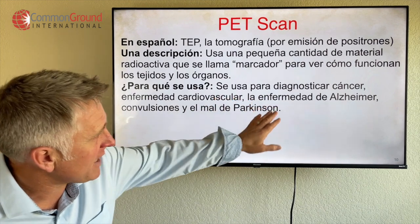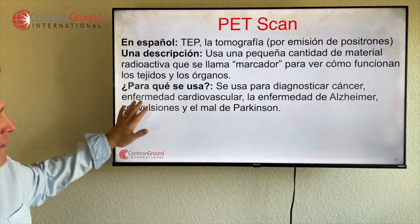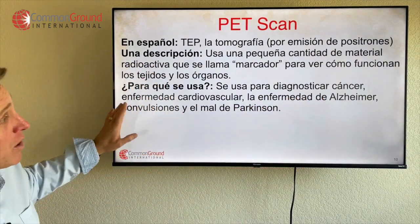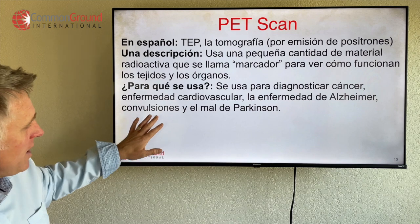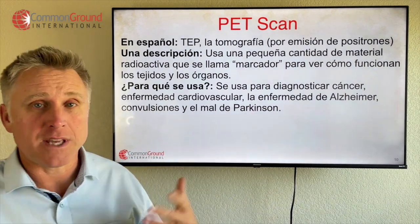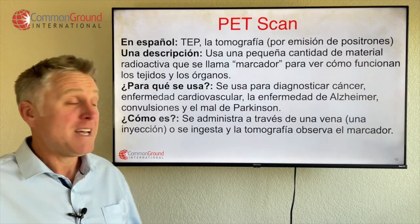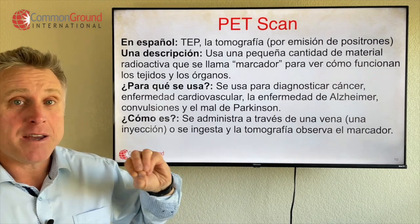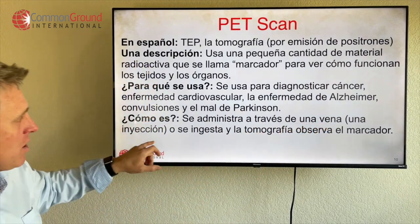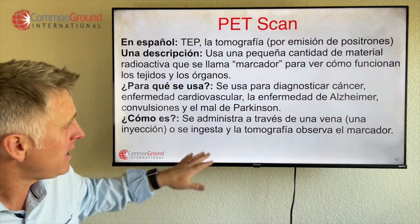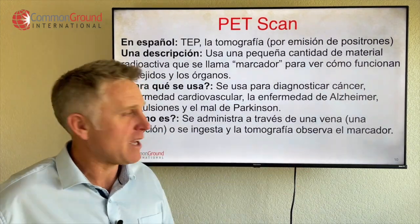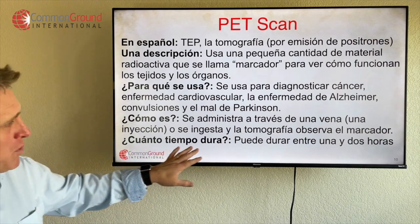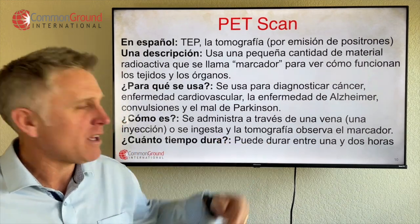Se usa para diagnosticar cáncer, enfermedad cardiovascular — so heart disease — la enfermedad de Alzheimer, y convulsiones, seizures, y el mal de Parkinson's disease. ¿Cómo es? Se administra a través de una vena — so it can be given by injection through the vein — o se ingesta, or you can swallow it, y la tomografía observa el marcador, and then the scan observes the tracer. ¿Cuánto tiempo dura? Puede durar entre una y dos horas.